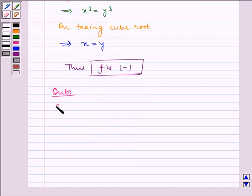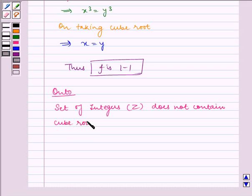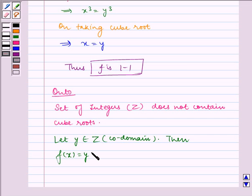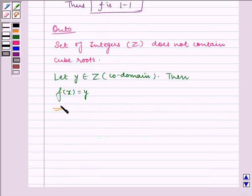We know set of integers Z does not contain cube roots. Let y belongs to Z in codomain. Then, f(x) is equal to y. This implies x³ is equal to y. This implies x is equal to y to the power 1 by 3.